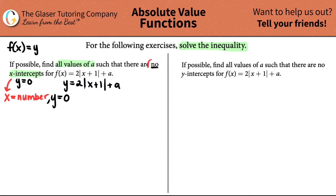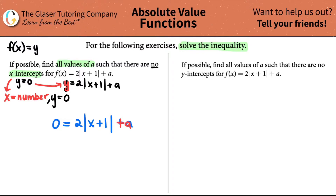Now if I want to get to where there's no x-intercepts, I have to find the cutoff point — find out where there is going to be an x-intercept. So I'm just going to plug in 0 for the y-value and see what's up. We have 0 equals 2 times the absolute value of x plus 1, plus a. I want to isolate the x-value, so I'll get a to the other side by subtracting a on both sides. That gives us negative a equals 2 times the absolute value of x plus 1.